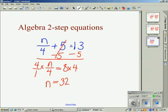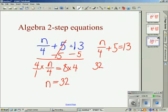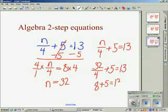Let's plug in our number to check if our sides are balanced. We have 32 divided by 4 plus 5 equals 13. Order of operations, we're going to do division first. We get 8 plus 5 equals 13. And 13 equals 13. Our sides check.